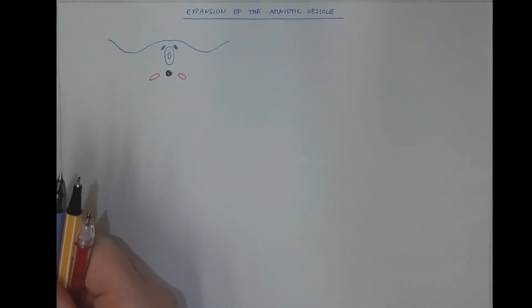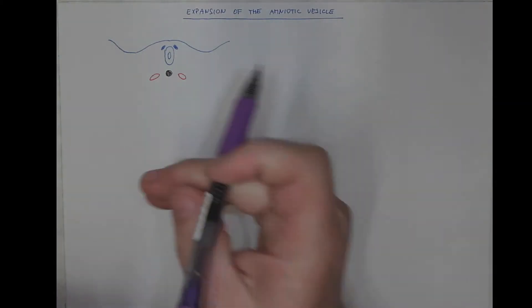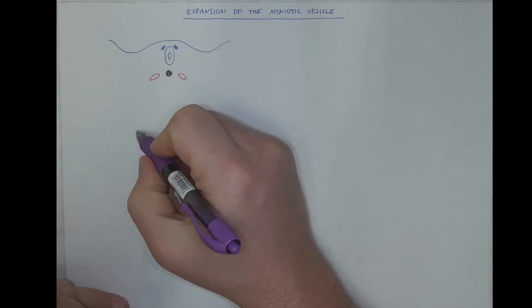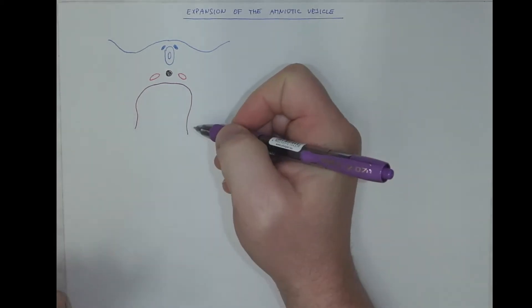And eventually, we got the roof of the yolk vesicle, which will be the future intestine, lined with the endoderm.